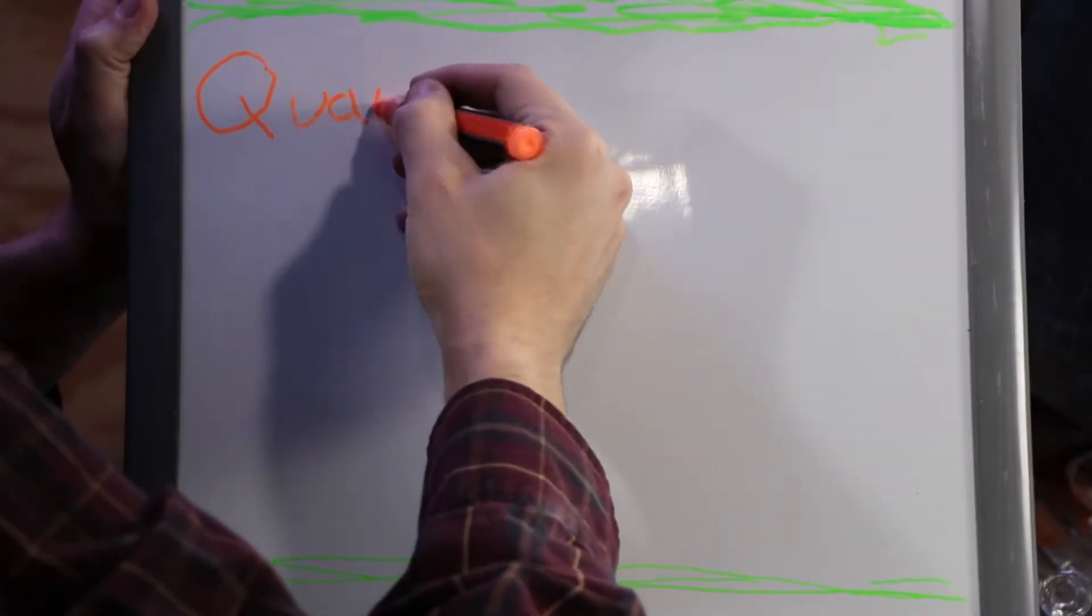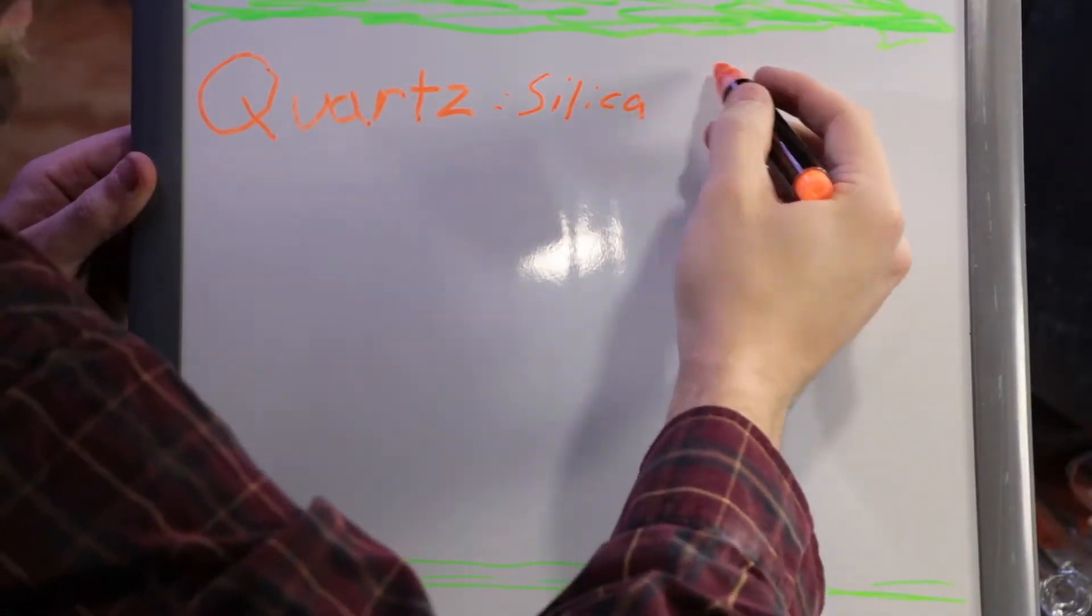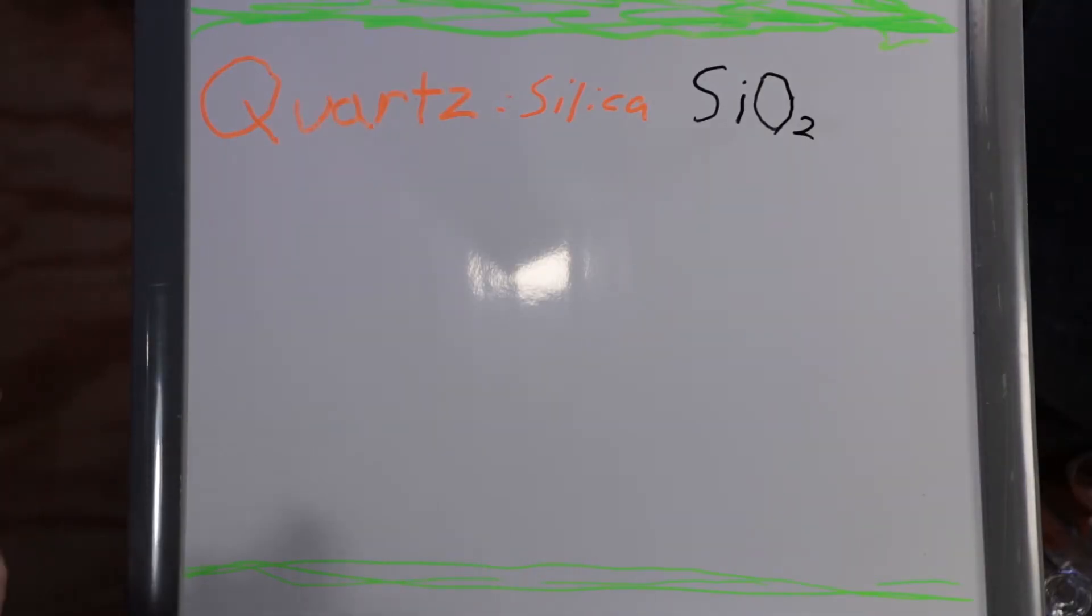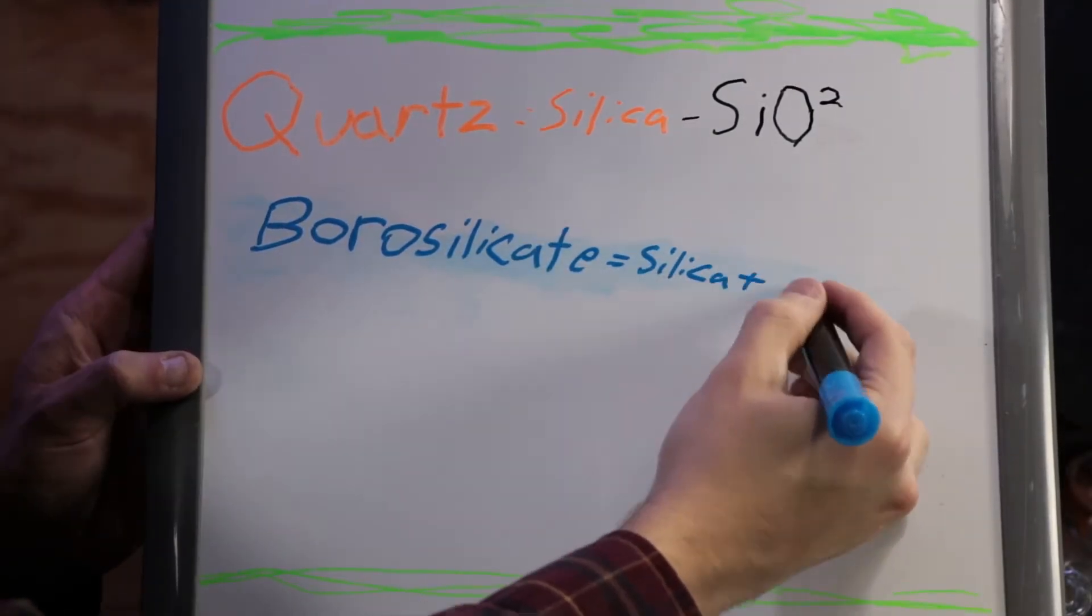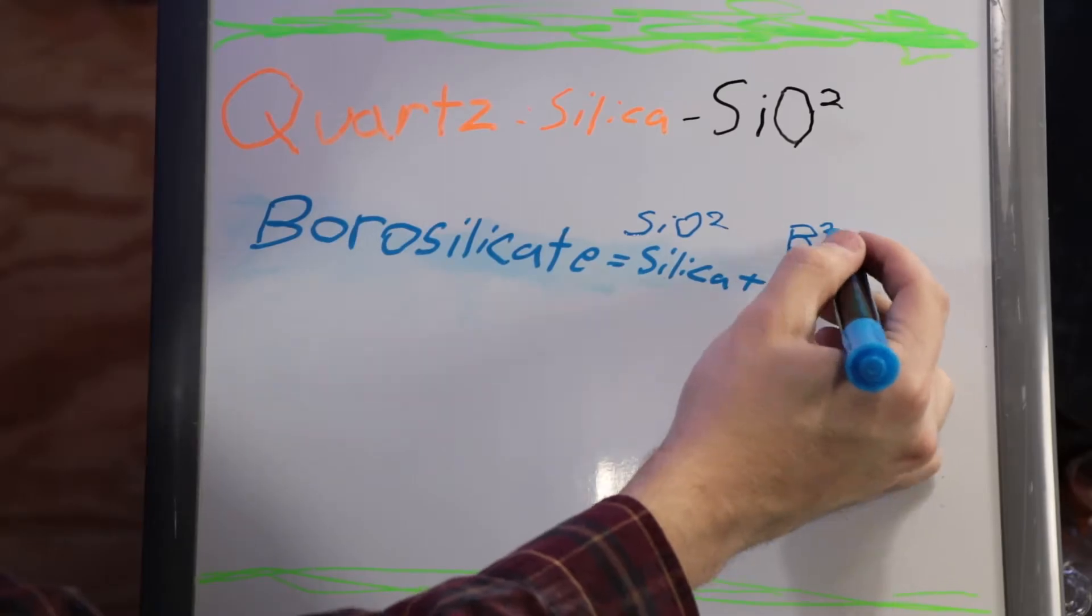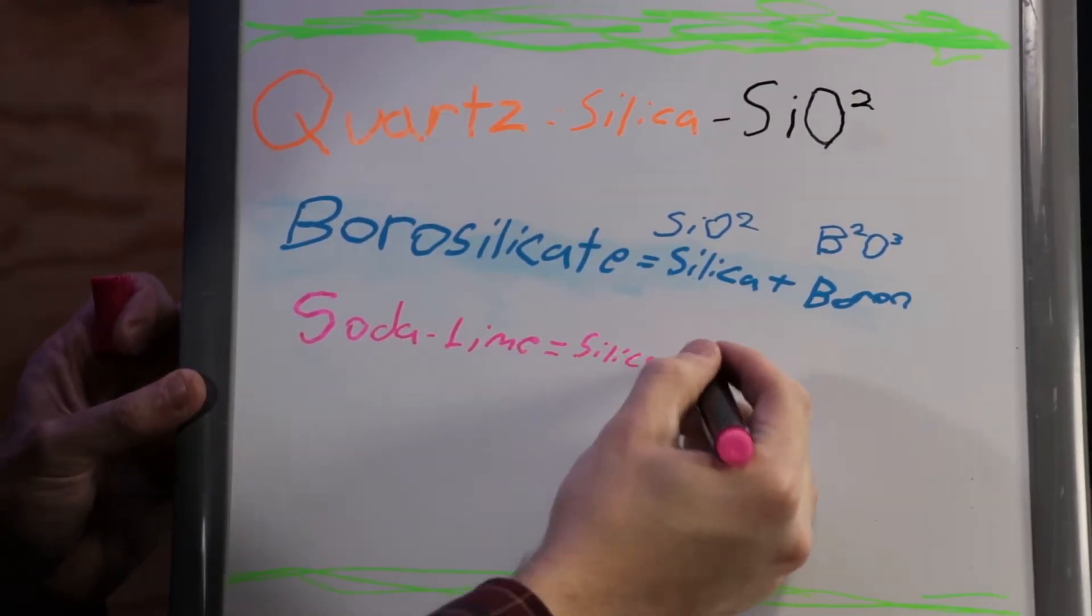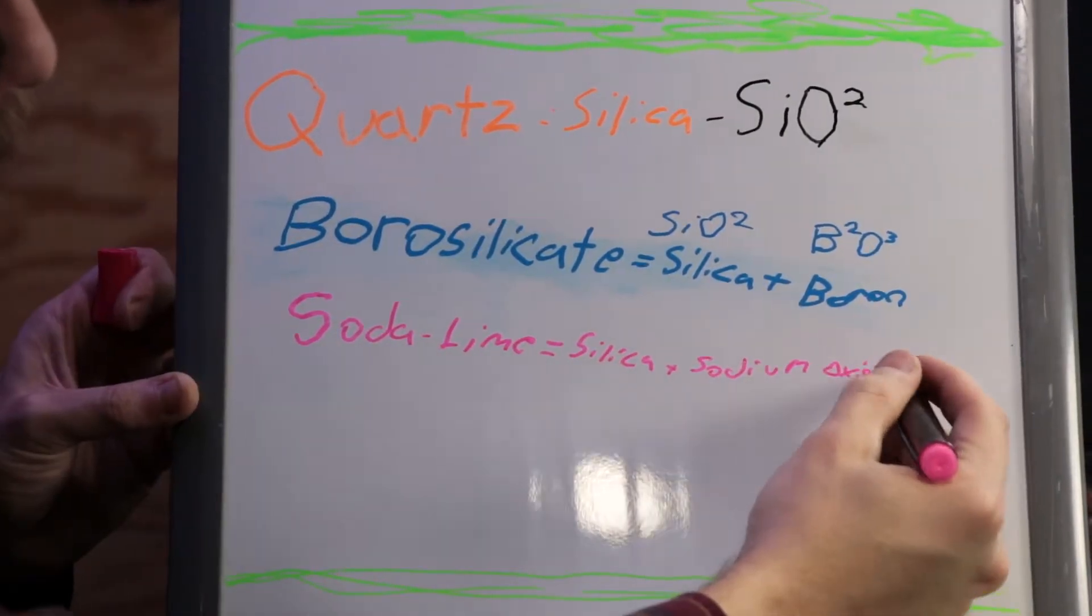We have quartz which is silica, borosilicate which is silica plus boron, and soda lime which is silica, soda oxide or sodium oxide, and lime.